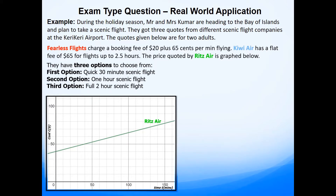The first option is a quick 30 minute scenic flight, the second option is a one hour scenic flight, and the third option is a full two hour scenic flight.